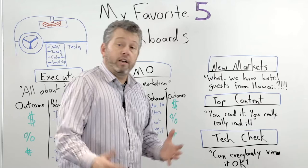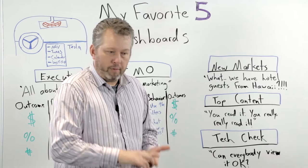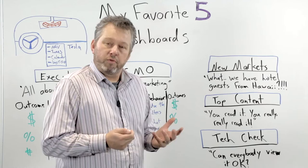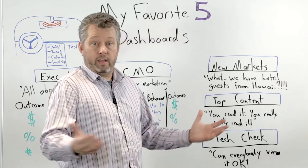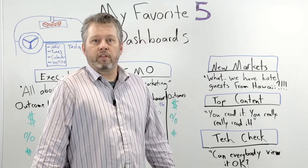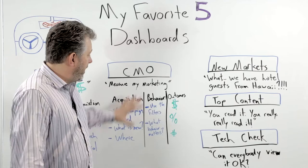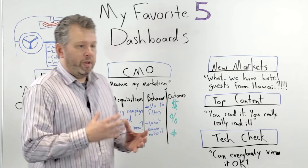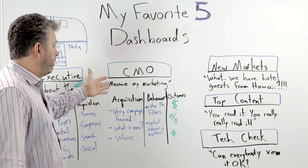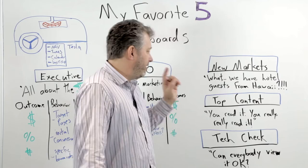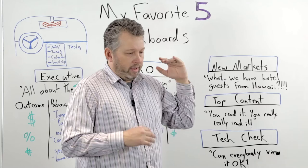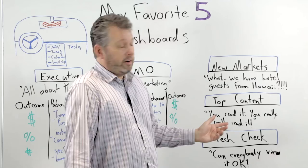Another example: top content. Going back to Beardbrand — they have a site called the Urban Beardsmen and they publish a lot of content, help articles, videos, and tutorials. Measuring that content is really important because they're putting a lot of work into educating their market and new people growing beards and using their product. They want to know: is it worth it? They're hiring photographers and writers, and we're able to see if people are reading the content they're providing. We focus on behavior around their content and figure out what outcome it creates. I'm a big fan of having a very specific content dashboard so you can always know what your top blogs and content are driving on your website.